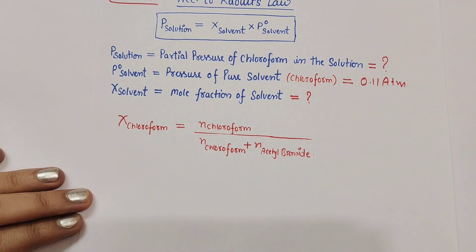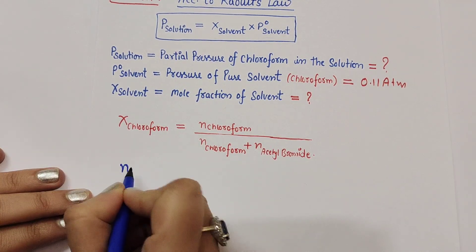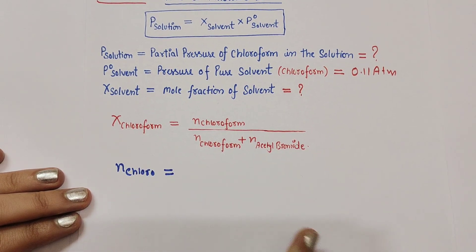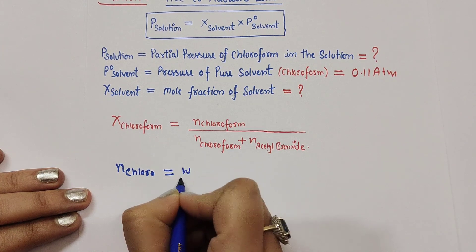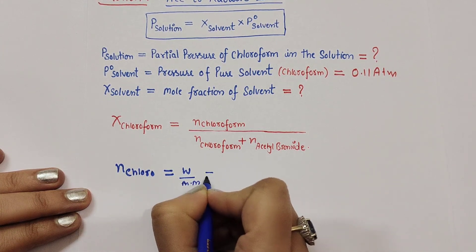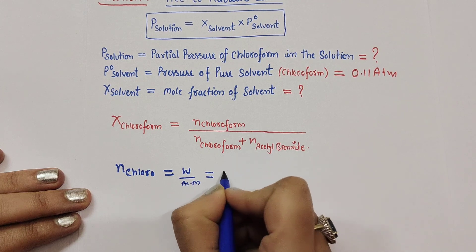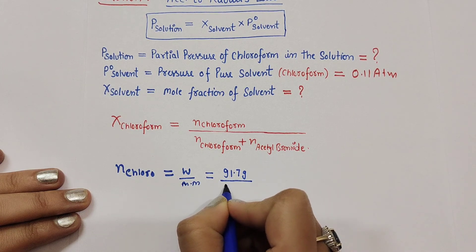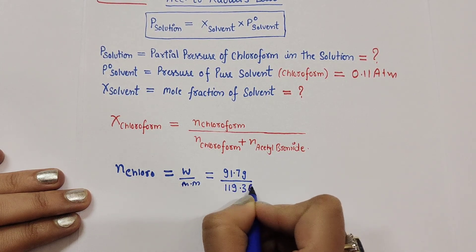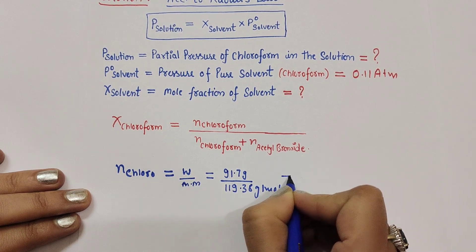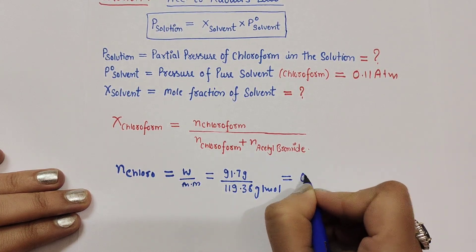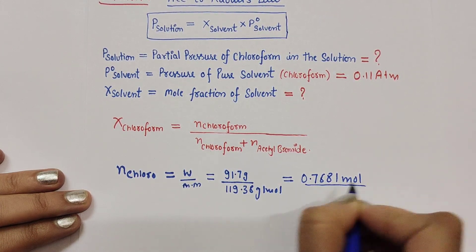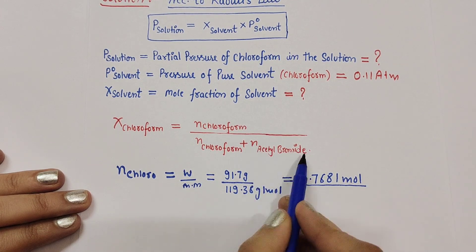Number of moles of chloroform: n = given weight / molar mass. Given weight of chloroform is 91.7 grams, divided by the molar mass of chloroform which is 119.38 grams per mole. Calculating this gives us 0.7681 moles of chloroform.